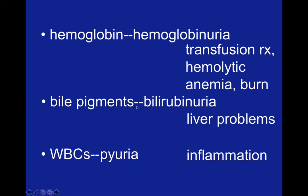Bile pigments in the urine indicates bilirubinuria — increased levels of bilirubin, a yellowish pigment from the liver. If we find bilirubin in the urine, we want to be looking at the liver as the cause. Lastly, if we find white blood cells in the urine, we call this pyuria. Increased numbers of white blood cells is known as leukocytosis, which typically takes place in cases of inflammation. So if we find lots of white blood cells in the urine, this indicates that inflammation is likely taking place somewhere in our body.